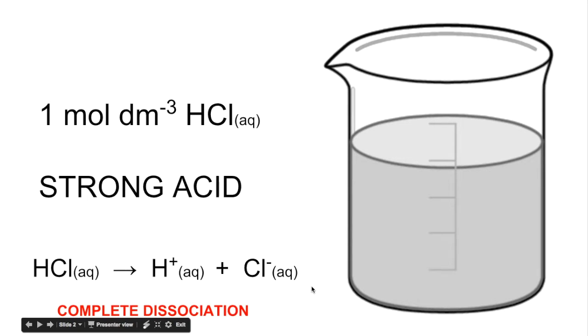If the concentration of the HCl is one mole per decimetre cubed, from the mole ratio, you can see that the H plus concentration will also be one mole per decimetre cubed, because there's a one to one mole ratio.